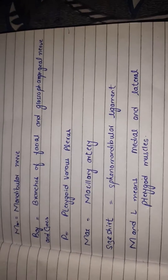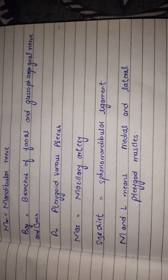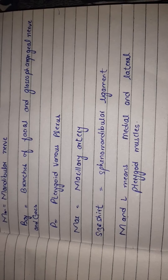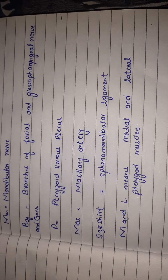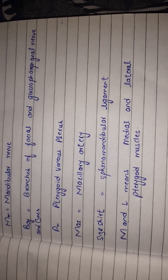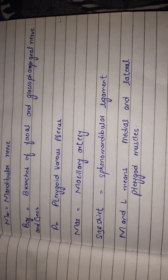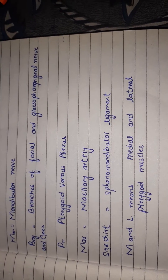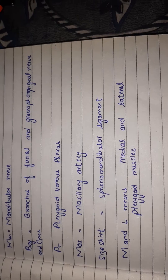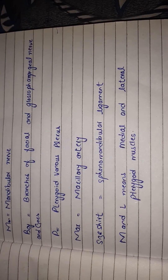The next contents of the infratemporal fossa are the branches of the facial nerve and the glossopharyngeal nerve. Which branch of the facial nerve? The chorda tympani branch of the facial nerve — it actually enters the infratemporal fossa through the petrotympanic fissure.